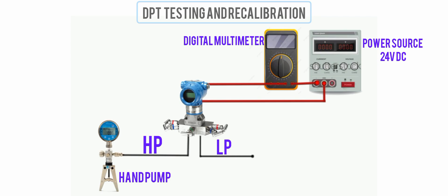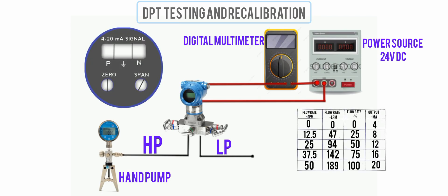We perform the actual calibration using the zero and span adjustments on the transmitter. Apply the zero percent input pressure value, which for us is zero inches water column, to the transmitter and adjust the zero until we get an output current of 4 milliamps.